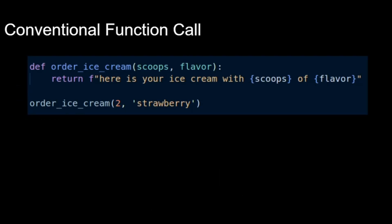Here's a conventional function call — this is just some Python code. We have a function called OrderIceCream. It takes two parameters, scoops and flavor, and it just returns a string. Just below that function, we can see that we're calling the OrderIceCream function, sending in two parameters: the number 2 and strawberry.